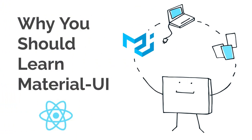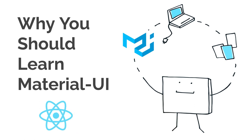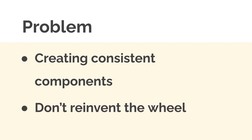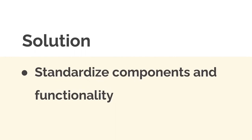In this lecture, we're going to learn what Material UI is from Google's Material Design, and why it's a very important library for building user interfaces and front-end web development. There is a problem with making any website: creating consistent components and being able to reuse them. Even if you're using React to make components, how do you make the design consistent? We want to create consistent design without having to reinvent the wheel.